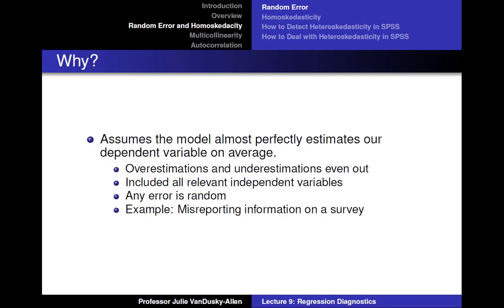Why? Because our regression model assumes we perfectly estimate our dependent variable on average. Our regression models will overestimate and underestimate particular observations, but all of those overestimations and underestimations will cancel each other out, leaving an average error of 0.